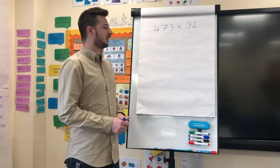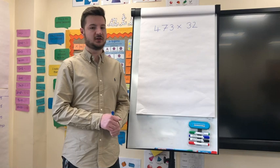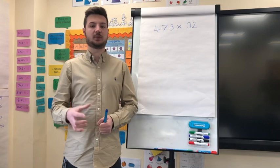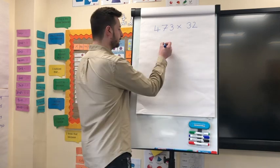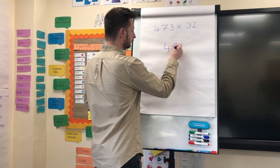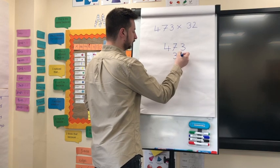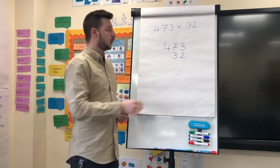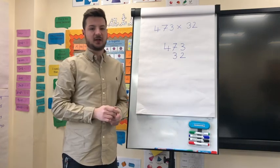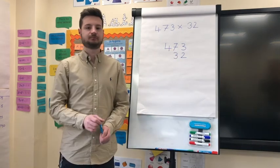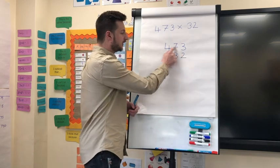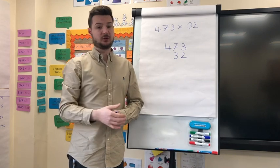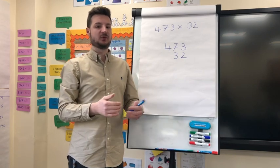So here is my first calculation: 473 multiplied by 32. My first step is to write my calculation using the formal long multiplication method. It's really important to remember when multiplying numbers that you put the smallest number below the larger number, lining up the ones and tens columns. However, you'll see later on that when we get to decimal numbers this rule doesn't really apply.